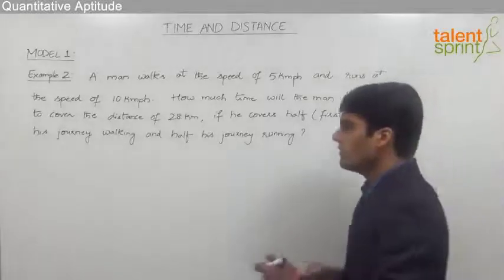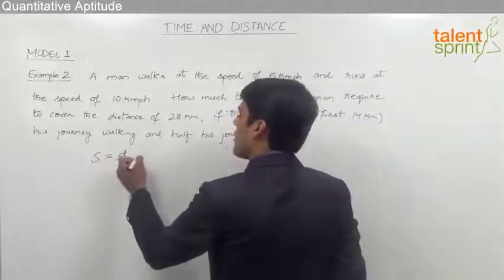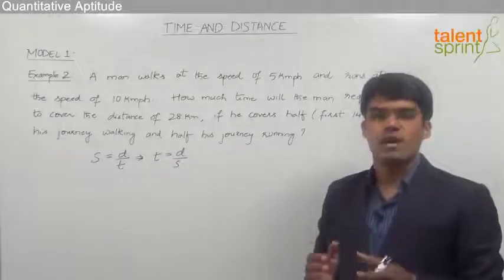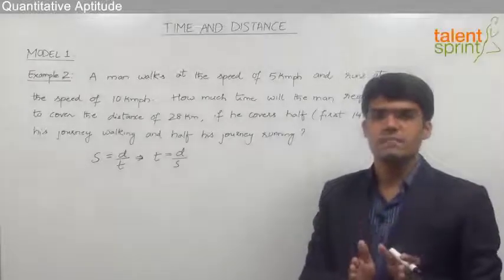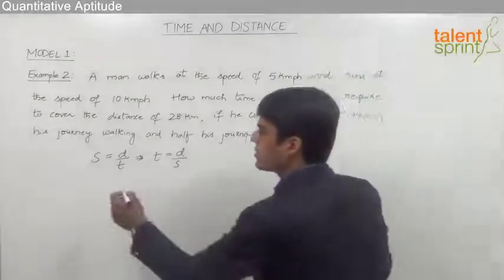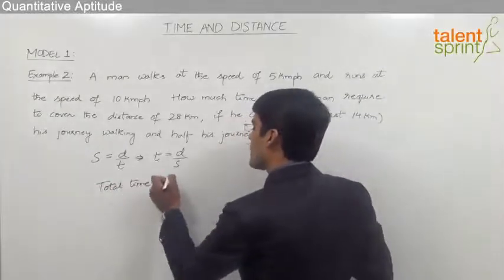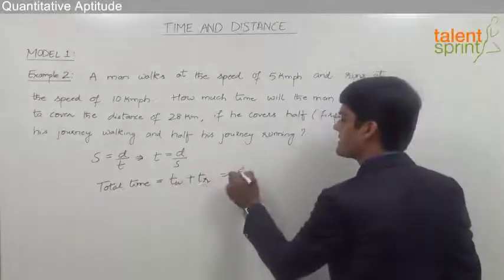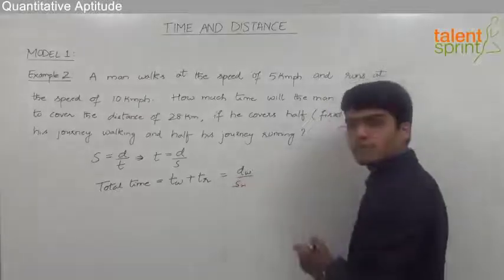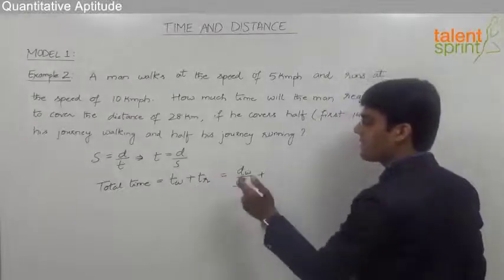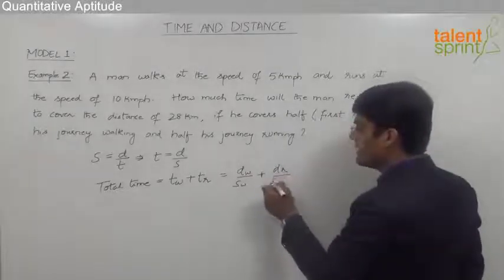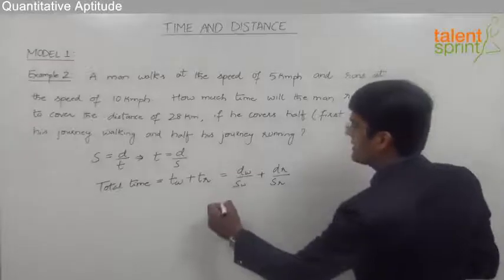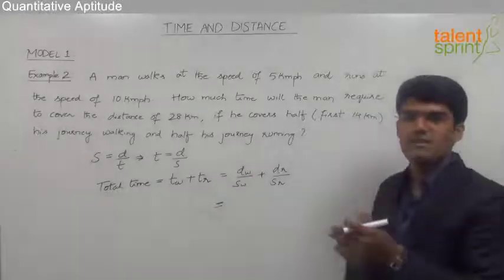Using the formula time = distance divided by speed, and since the journey is covered in two halves, the total time equals time for walking plus time for running. Time for walking is the walking distance divided by walking speed, and time for running is the running distance divided by running speed. We have all four values and can substitute directly.